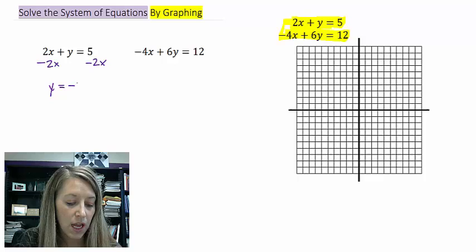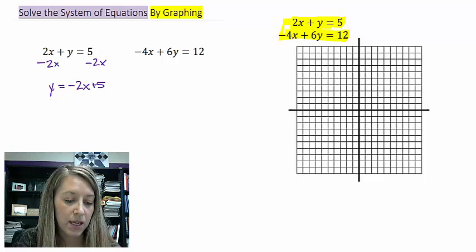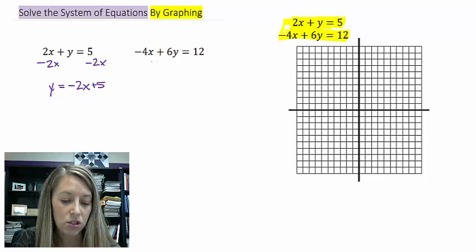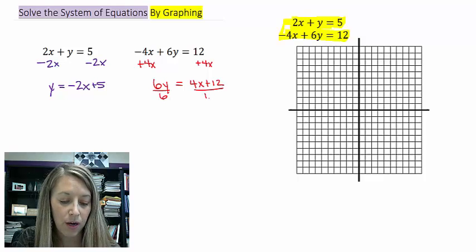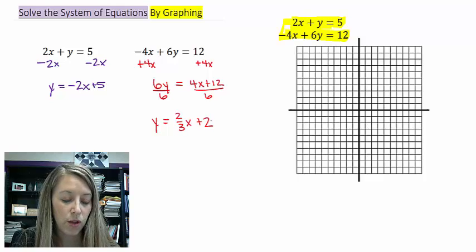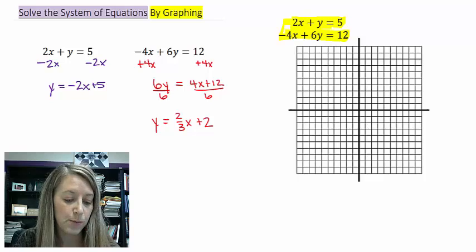That gives me y equals negative 2x plus 5. And then my second, I need to add 4x to both sides, giving me 6y is equal to 4x plus 12. Divide by 6 everywhere gives me y is equal to 2 thirds x plus 2. So let's graph each of these in their respective colors.